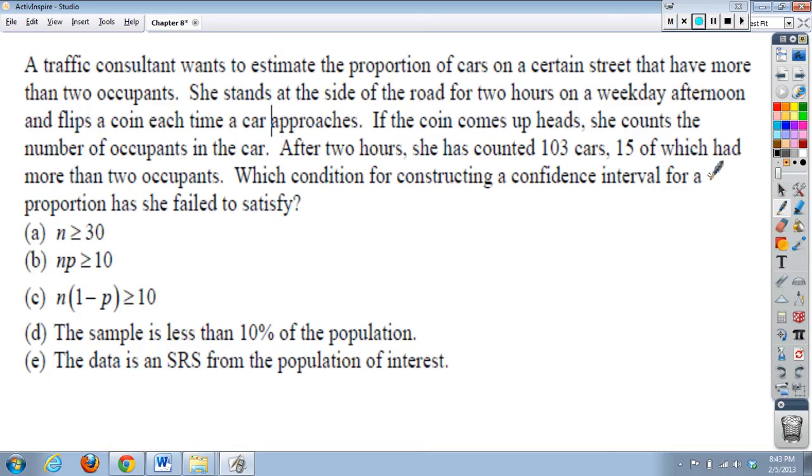Now, you might say, well, she wasn't really doing a random sample. She was just letting cars come to her. She was kind of doing a convenience sample, but if you think about it, she used a random tool here, a coin, that let her decide if a car approached her, she was going to randomly decide if she was going to count it or not. So this does kind of represent a random sample.